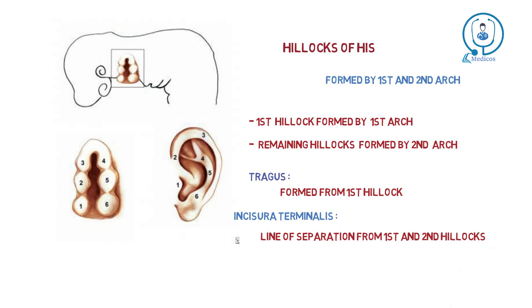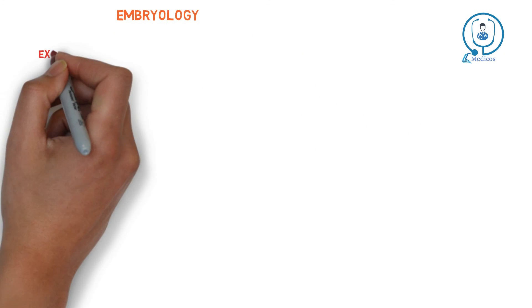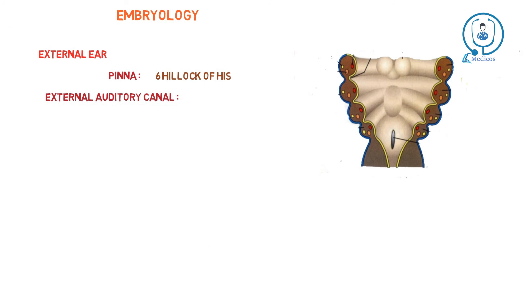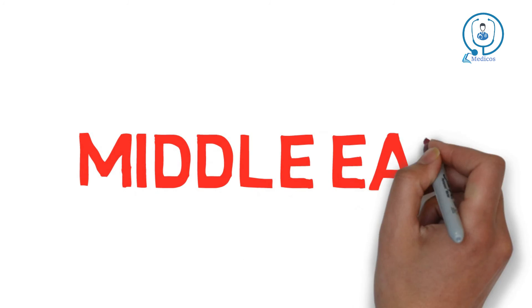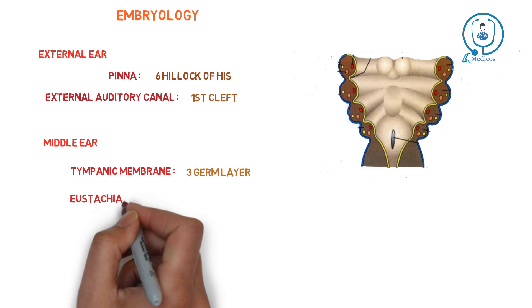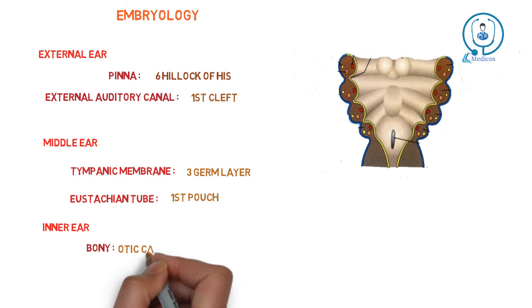Let's revise the embryology of the ear. In the external ear: the pinna is formed by six hillocks of His, and the external auditory canal is formed by the first cleft. In the middle ear: the tympanic membrane is formed by three germinal layers, and the Eustachian tube is formed by the first pouch. In the inner ear: the bony part is formed by the otic capsule, and the membranous part is formed by the otic vesicle.